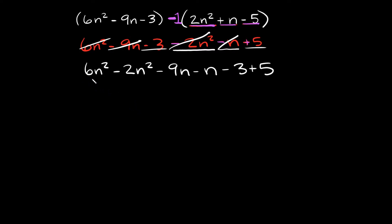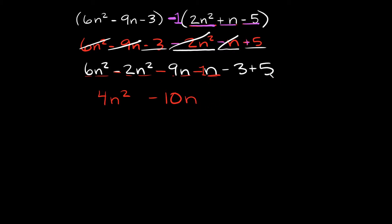So let's start on the left. 6n squared minus 2n squared — 6 minus 2 is equal to 4, and since we have n squared in both, you just keep the n squared. Coming over here, we have negative 9n minus 1n, so negative 9 minus 1 is negative 10, and you just keep the n. And then lastly, negative 3 plus 5 is equal to positive 2.